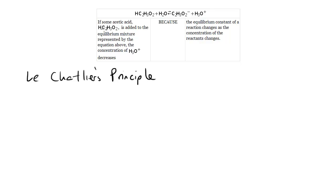If some acetic acid, HC2H3O2, is added to the equilibrium mixture presented by the equation above, the concentration of H3O+ decreases.